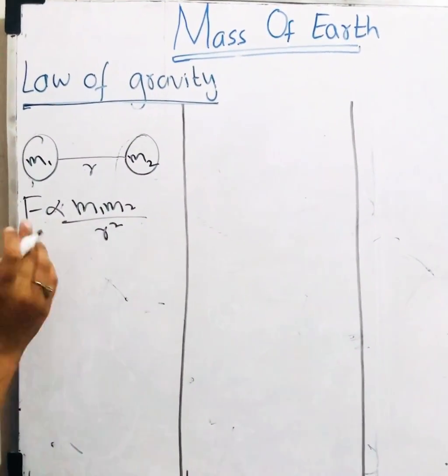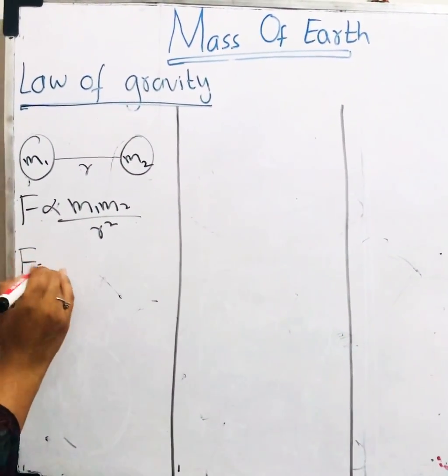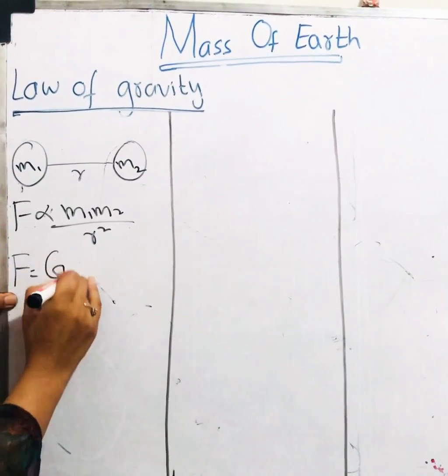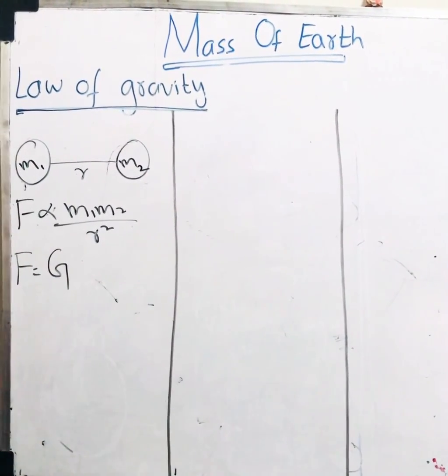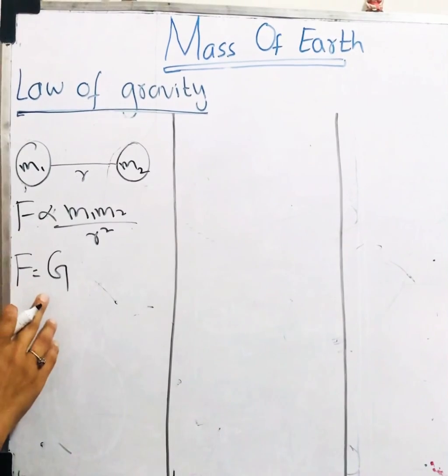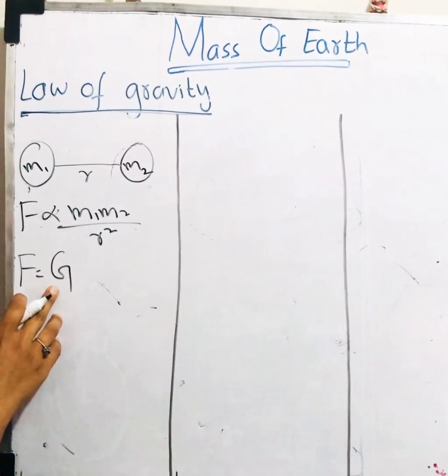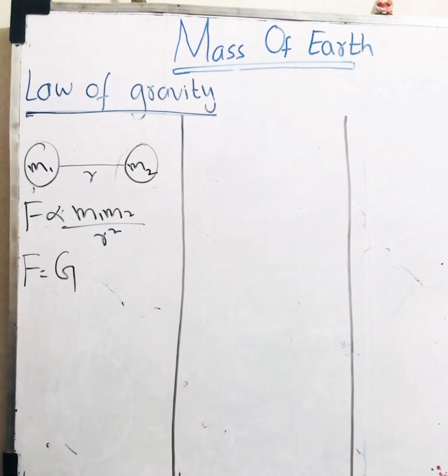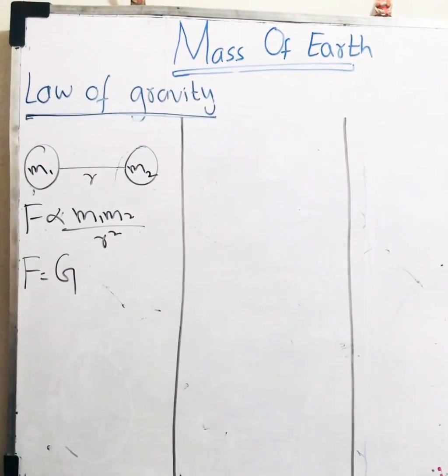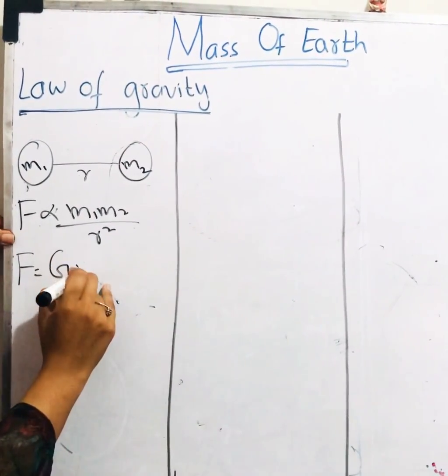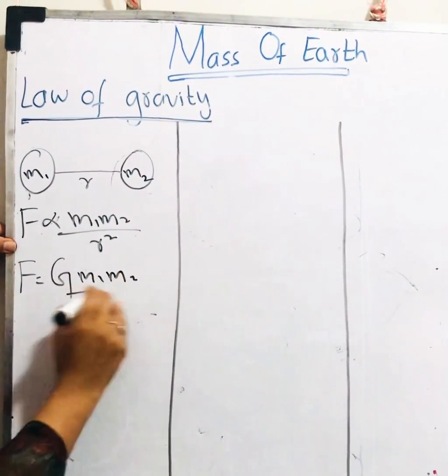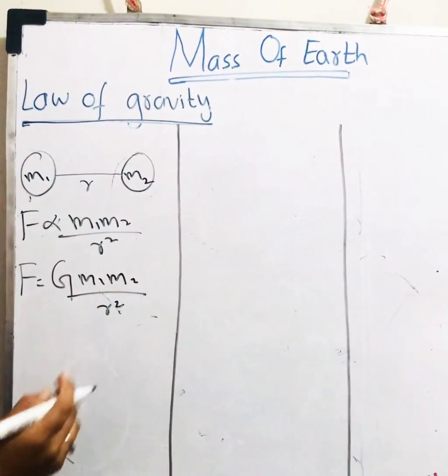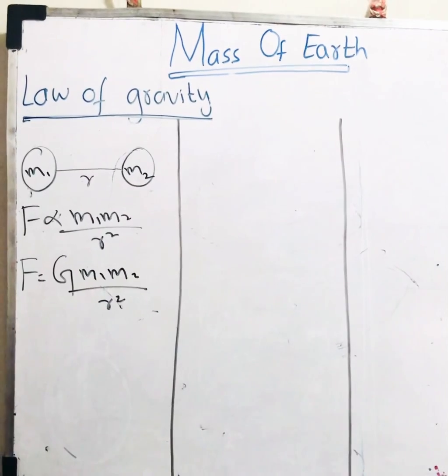I have to replace this proportionality with some constant. So here I want to replace it with capital G which is known as gravitational constant. It is universal constant. The value of capital G is fixed everywhere which is 6.67 into 10 to the power minus 11 newton meter square per kg square. So F equals G m1 m2 divided by r square. This is law of gravity or Newton's law of gravitation.